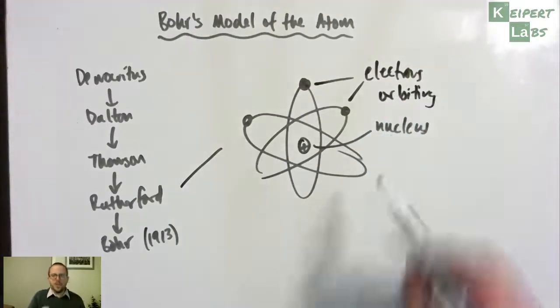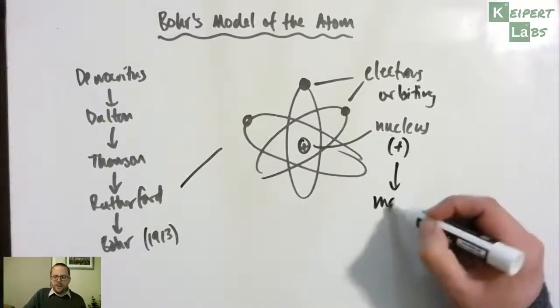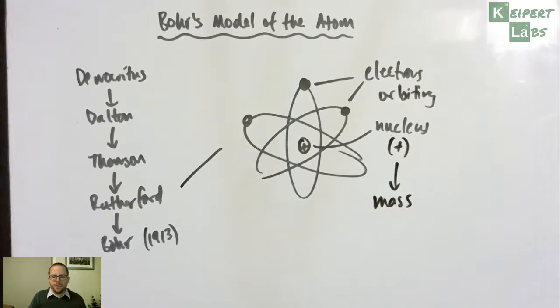So this is what he proposed, that the nucleus was positively charged and had most of the mass of the atom, that a tiny fraction of the mass was represented by the electrons because they were particles, but most of it was concentrated at this little area at the centre.